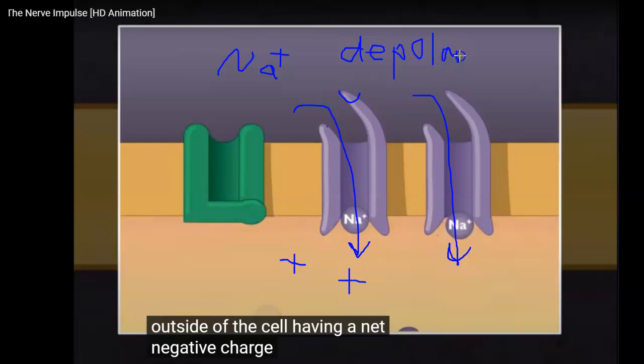In depolarization, the voltage now gets to be about plus 40 millivolts. Don't be too concerned about the voltage itself, it's more that it's just positive. So now it is positive. And because of this positive change, it will affect these potassium channels.